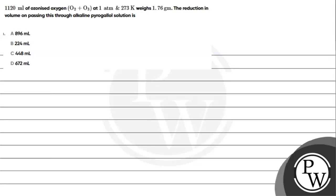Hello, let's read this question. The question is: 1120 ml of ozonized oxygen (O₂ + O₃) at 1 atmosphere and 273 Kelvin weighs 1.76 grams. The reduction in volume on passing this through alkaline pyrogallone solution is - and the options are 896 ml, 224 ml, 448 ml, and 672 ml.